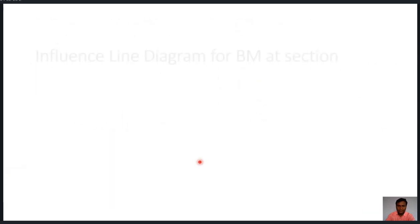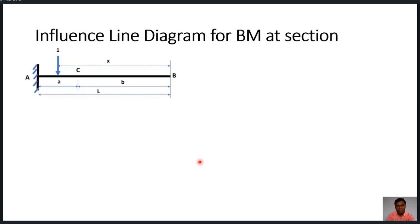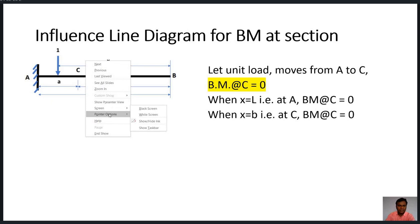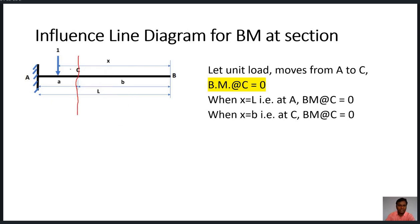For the influence line diagram for bending moment at section C, we again divide into two cases. When the unit load moves from A to C, taking a section at C and observing the right-hand side reveals no forces, so the bending moment at C is zero. For any position of the unit load from A to C, the bending moment at C remains zero.